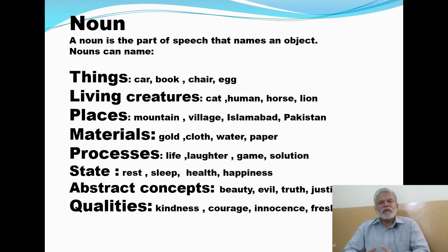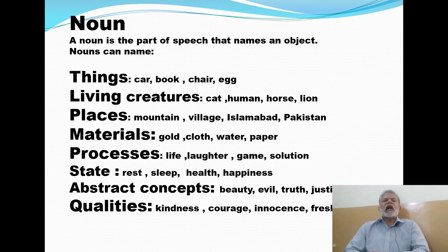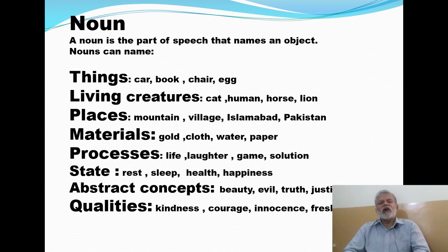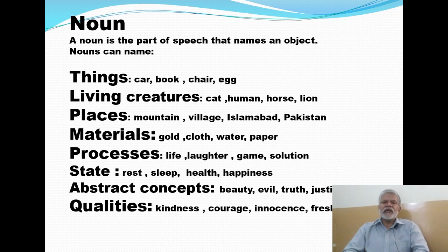I have given only a few examples here, but you may add many more: car, book, chair, egg, curtain, table, cupboard, floor, fan — there are many things. Then nouns may also denote the names of living creatures. All living creatures have got their names. Examples include cat, human beings, horse, lion, butterfly, glowworm, dog, donkey — so there are so many living creatures and their names are also nouns.